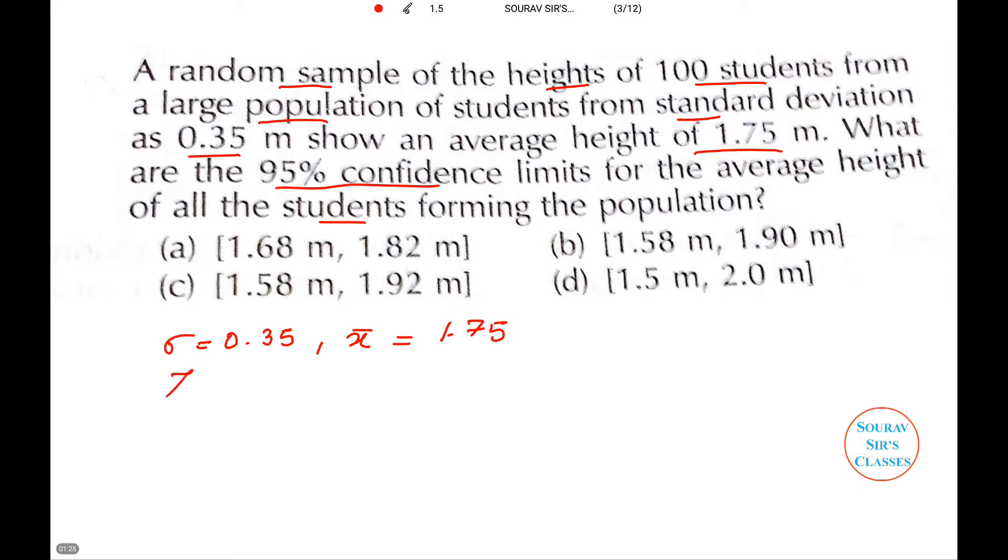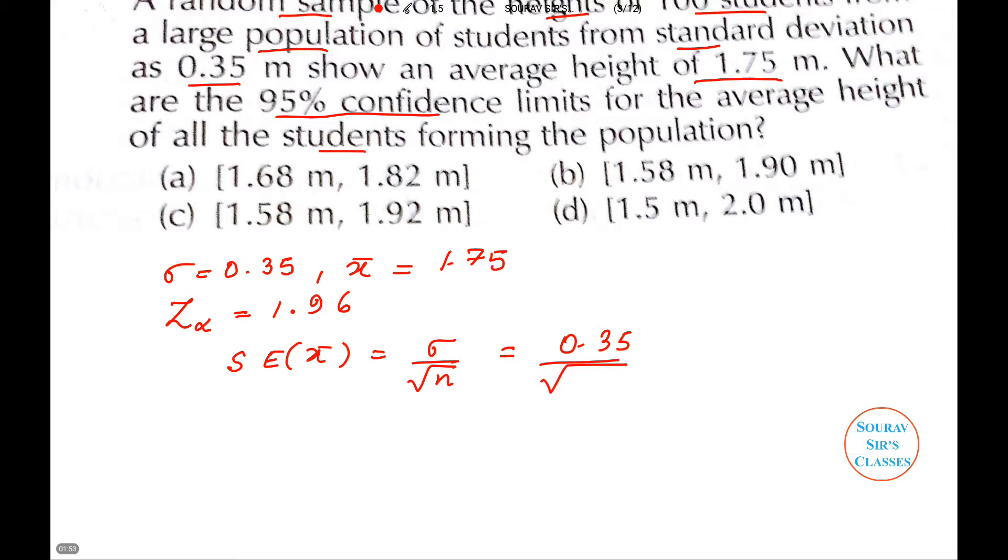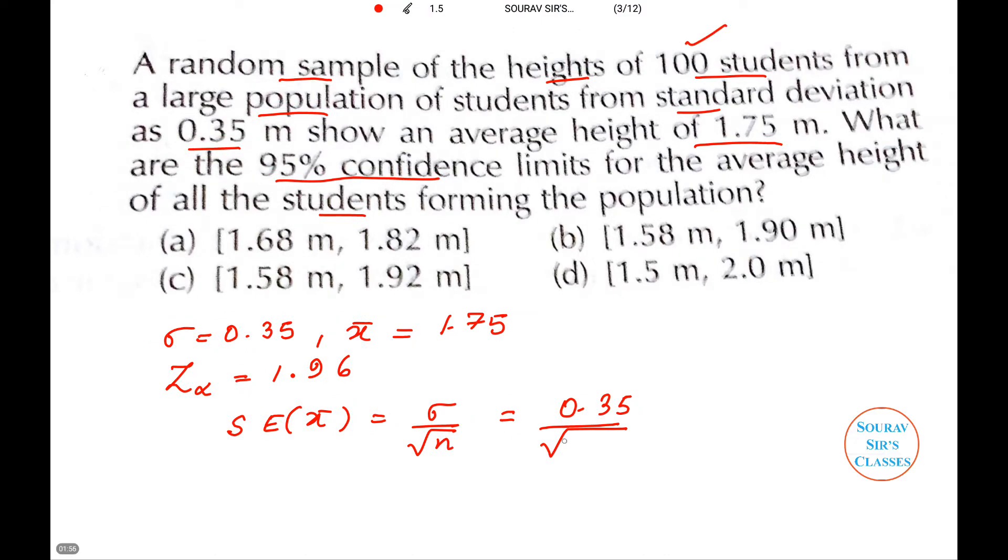Now, z_α is equal to 1.96. Then, the standard error of x̄ will be standard deviation divided by square root of n, and this will be 0.35 under root. The n value is given as 100 students, so under root 100. This will give us a value of 0.035.